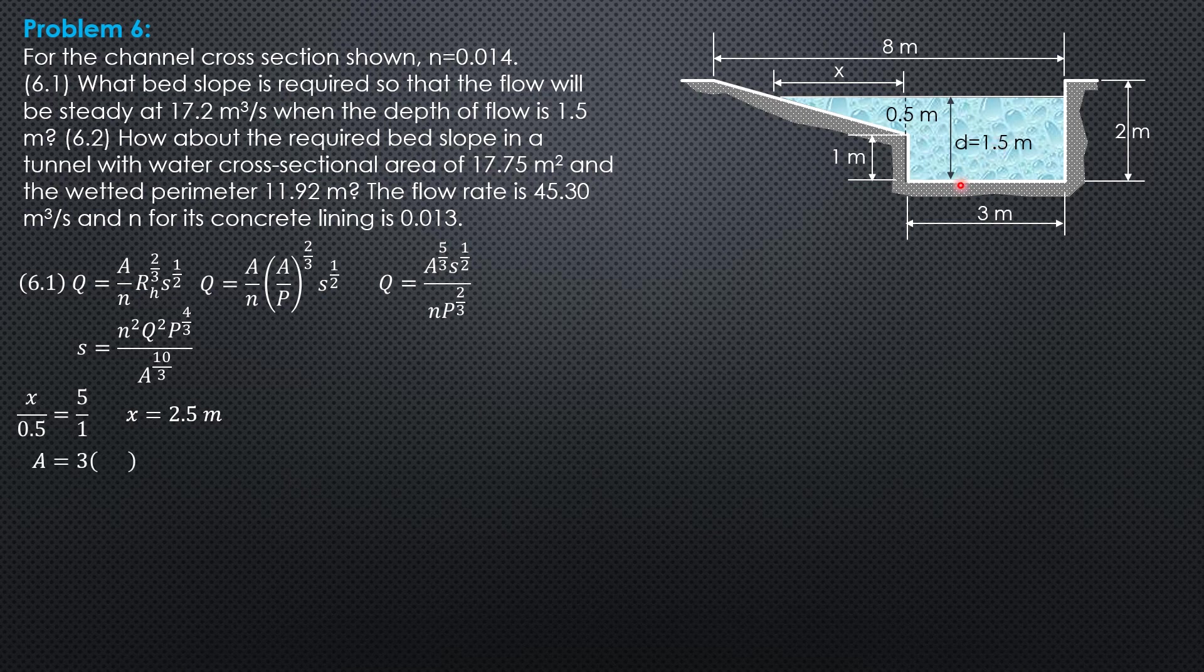That the area is 3 times 1.5 for the rectangular portion plus 1 half of 2.5 times 0.5. 1 half of 2.5 is 0.5 of 2.5 times 0.5. So the area is 5.125 square meters.